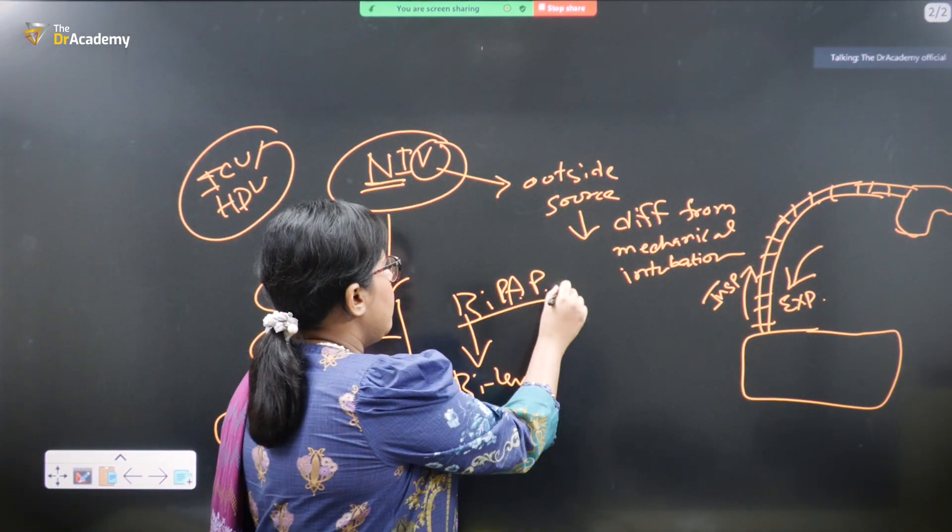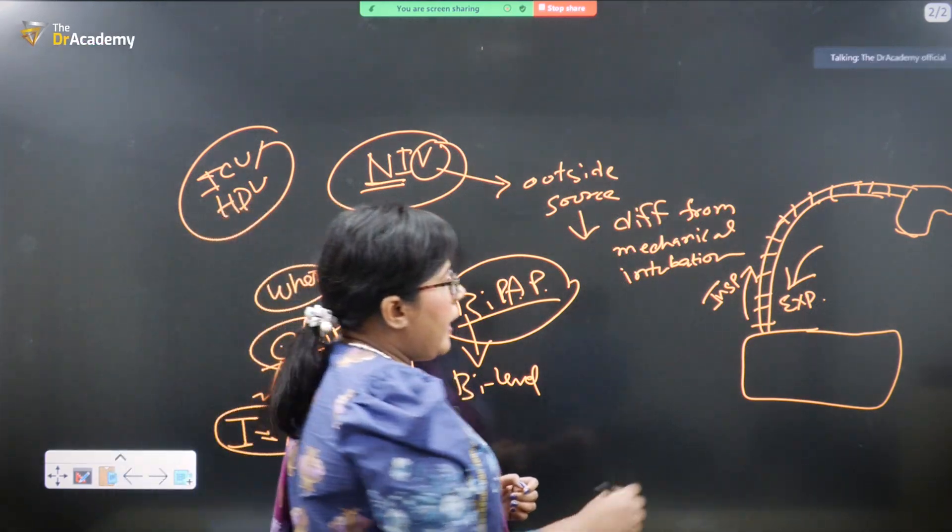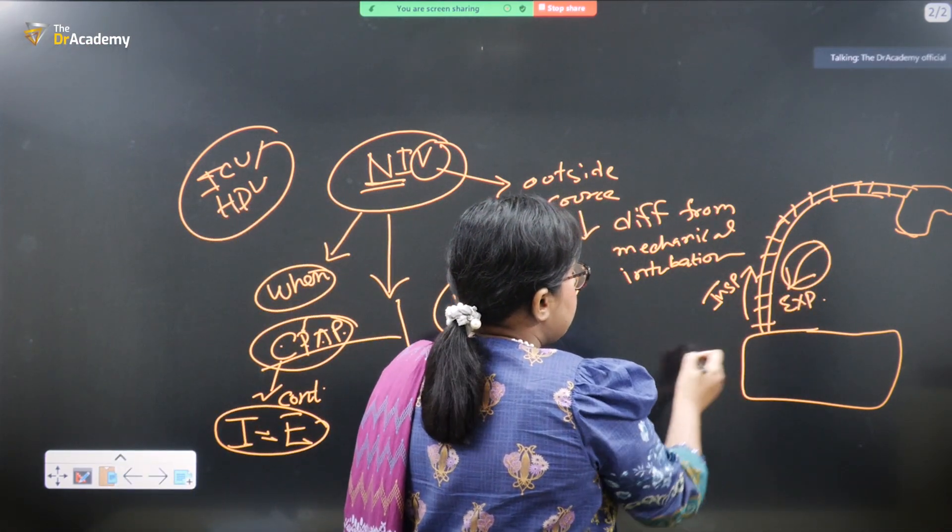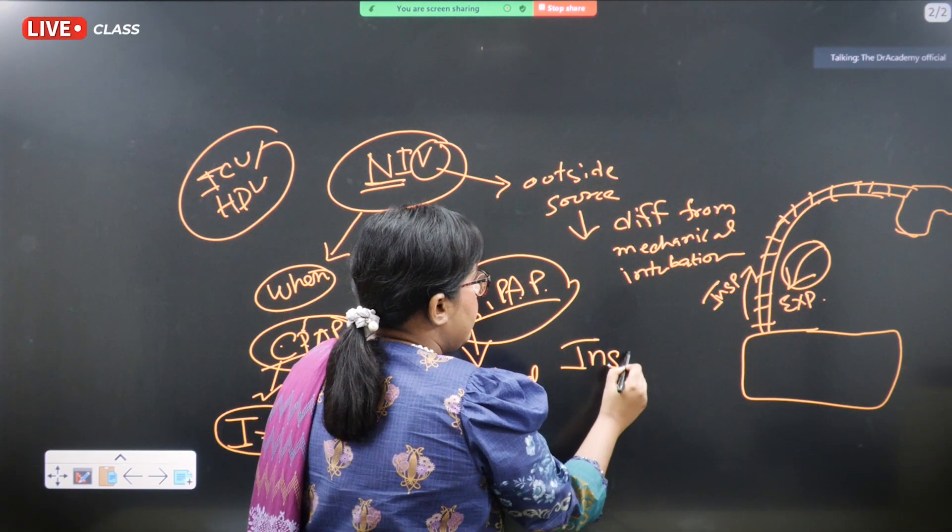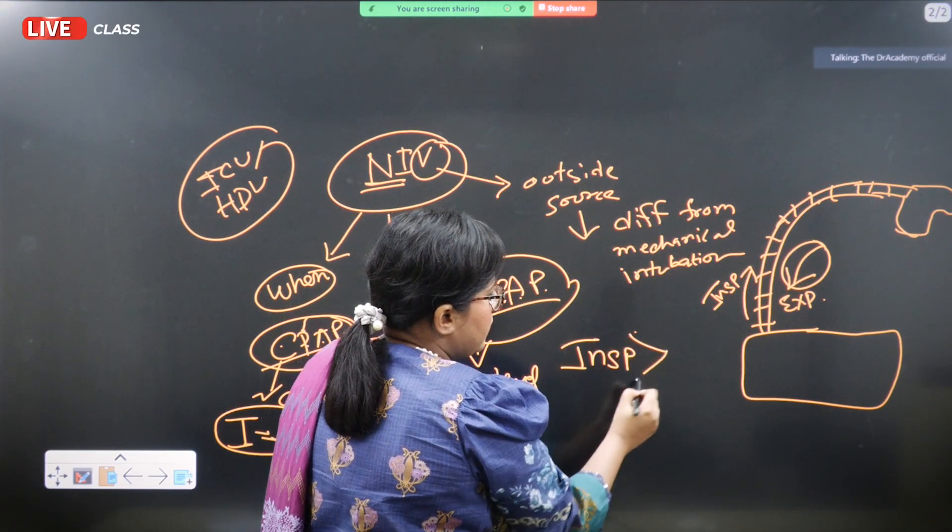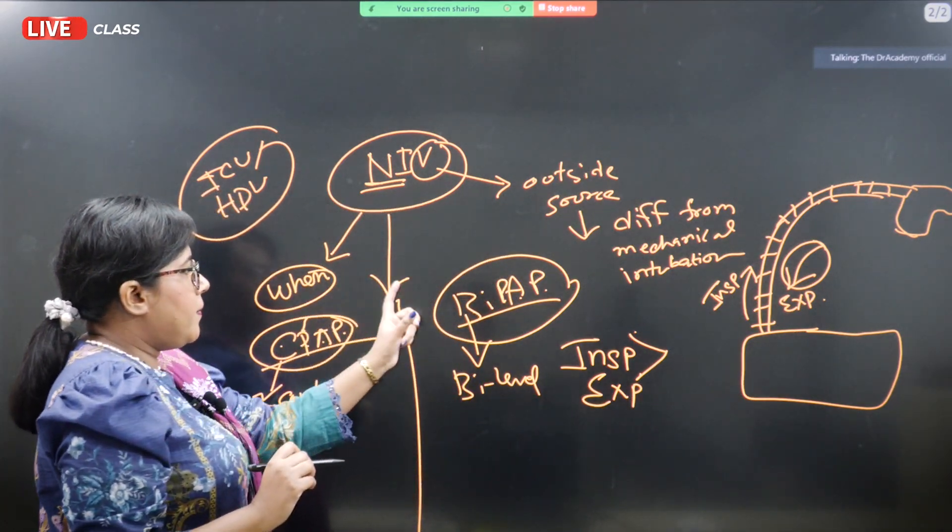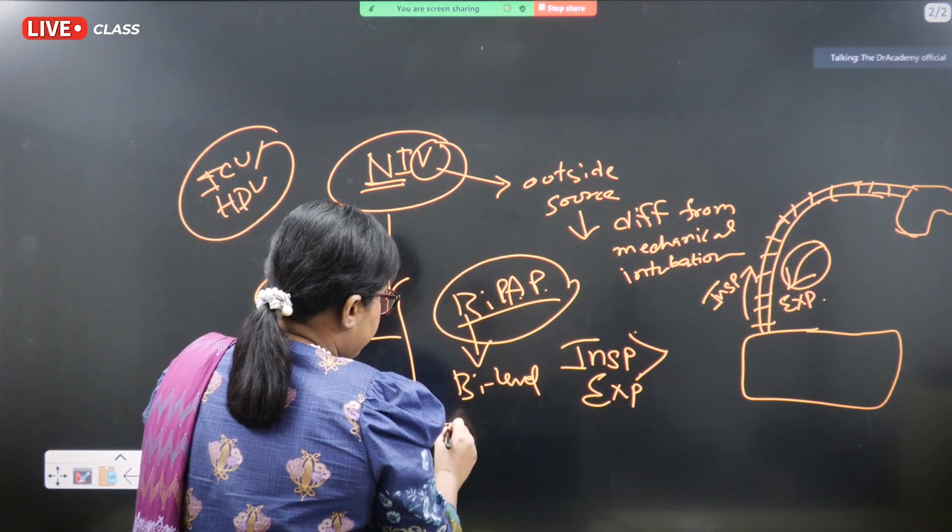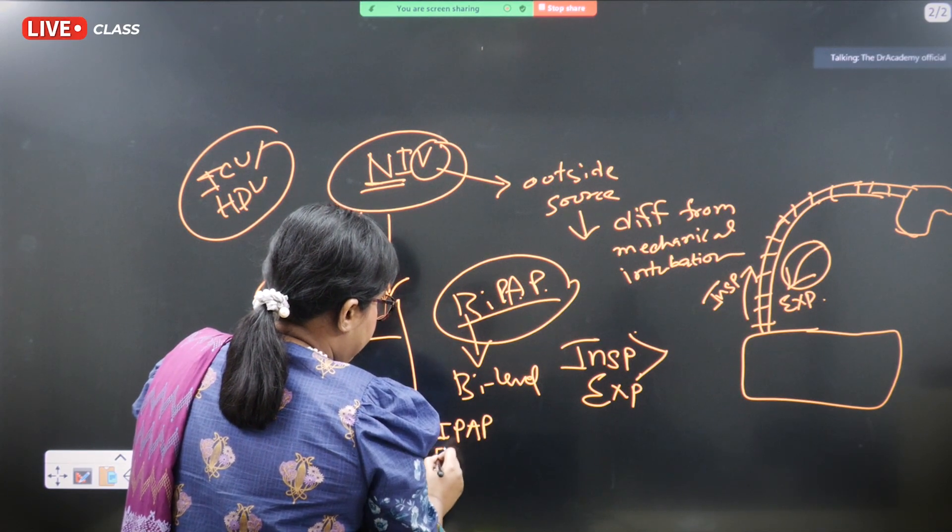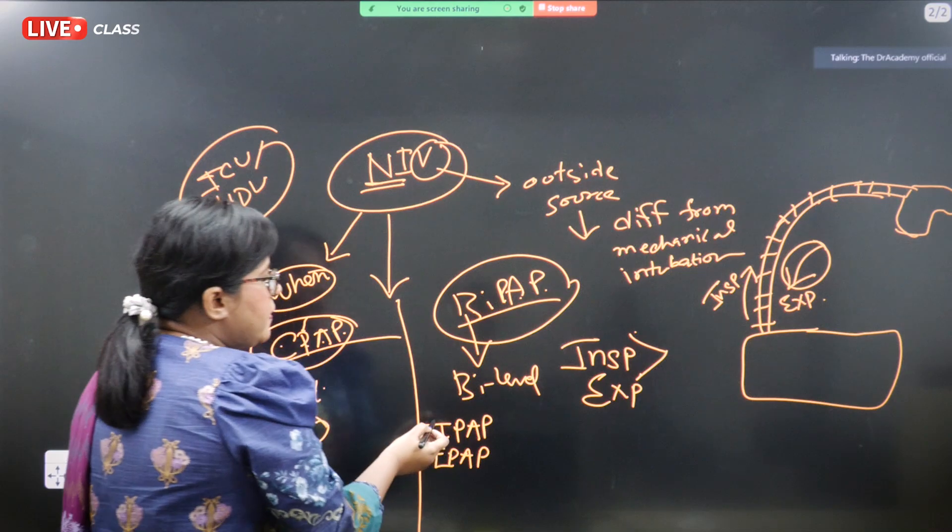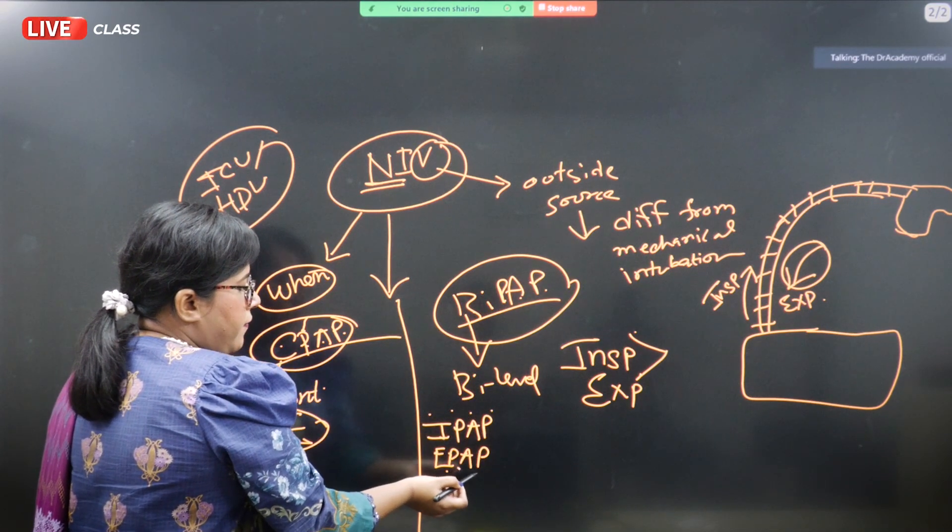In case of the BiPAP, what happens is the expiratory circuit is less. Or you can just remember it like inspiration is greater than expiration. So in both of the CPAP and BiPAP, there are mainly two components, known as the IPAP and EPAP. This is known as the inspiratory positive airway pressure and expiratory positive airway pressure.